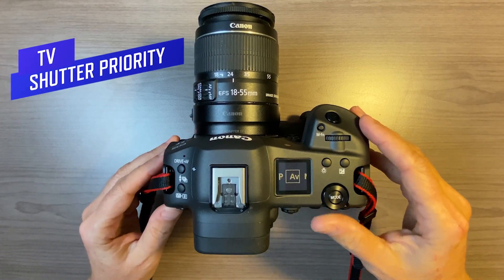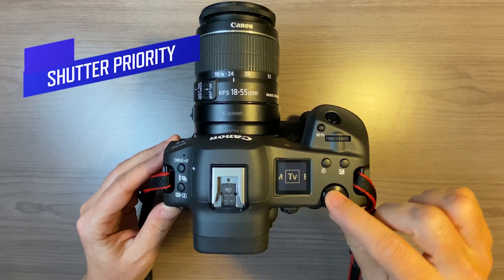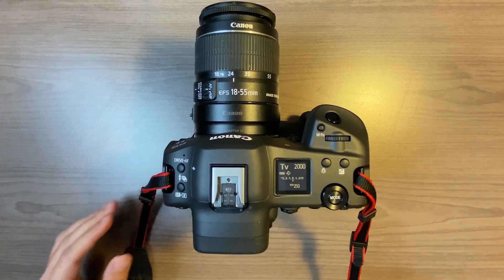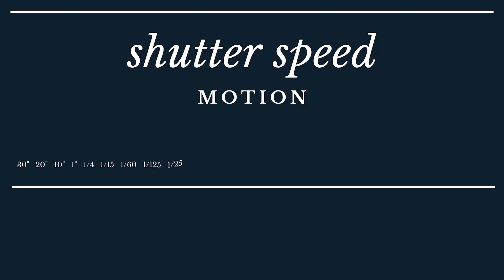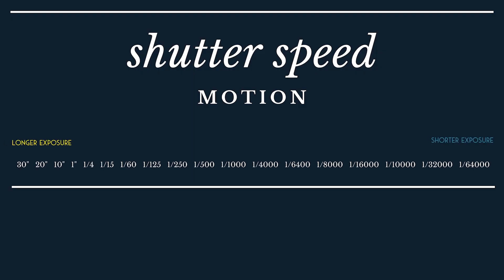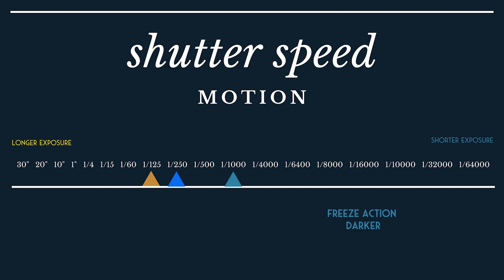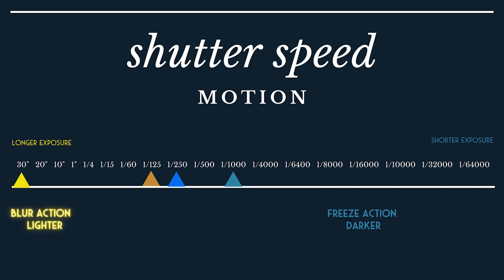When you go to shutter priority mode, which is called TV mode, you set the shutter speed and the camera sets the aperture. You're pretty much controlling your motion — if you want to freeze the action you'll move it to 1/1000, and if you want to blur the action you'll want to go to 1/30.